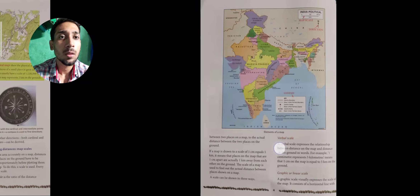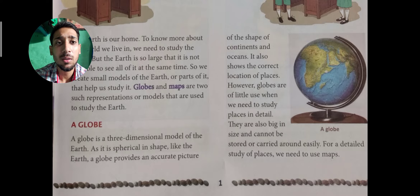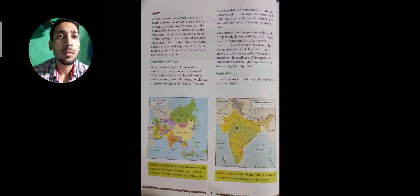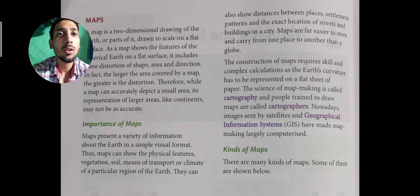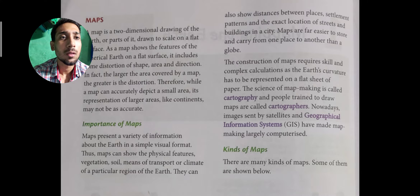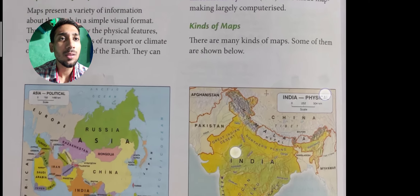In the beginning we learned about globes and maps. Globes are three-dimensional models used to study the earth, but they are not easy to carry around. So we use different kinds of maps. Maps are two-dimensional drawings which are easy to carry from one place to another. Because of their simple visual format we can easily read them, and cartographers make maps. The geographical information system has also made it easy using satellite imagery.